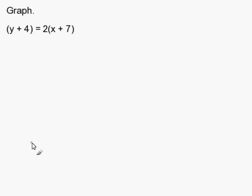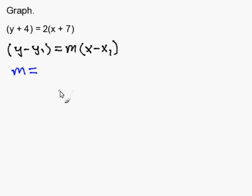Graphing an equation in point-slope form. Let's write down the point-slope form equation. Now to graph this equation we must identify two parts: we need to identify the slope and the point which the line passes through. Now the slope is m. m corresponds to 2, so therefore 2 is our slope.